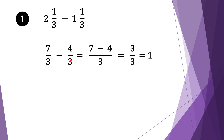Now we have a normal subtraction of fractions and we have the same denominators, so we take three as a common factor. Three divided by three is one, one times seven is seven. We do the same for the second fraction: three divided by three is one, one times four is four. Seven take away four is three, and we bring three down. Top and bottom are both three, so three goes into three once and three goes into three once. Our final solution is one.